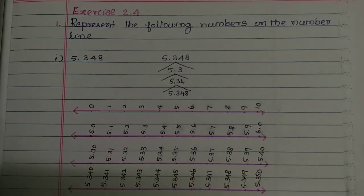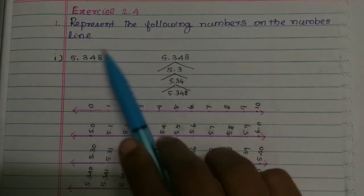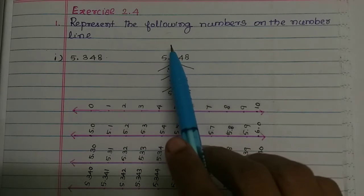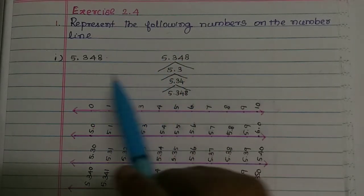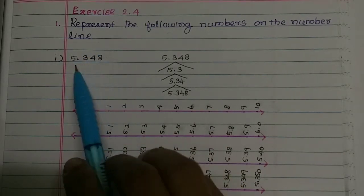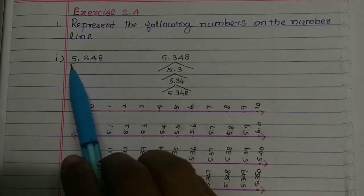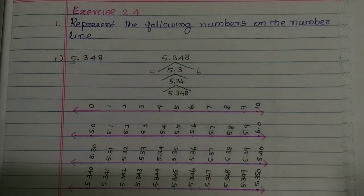Hi students! In this video, we are going to look at exercise 2.4. If you look at the examples, you can see the following numbers. We are going to represent the decimal number 5.348. If you look at the number 5.348, you can see it here.